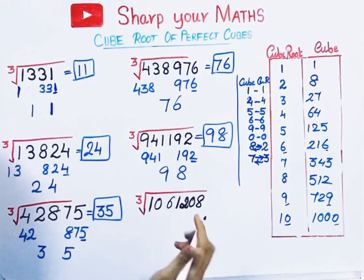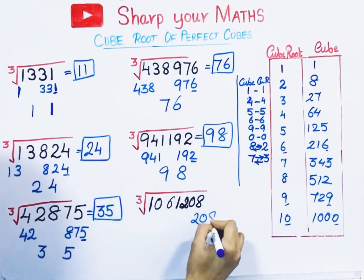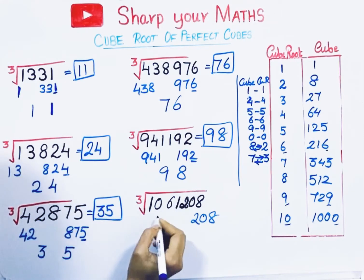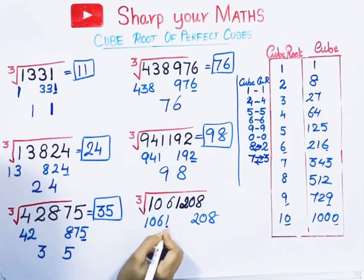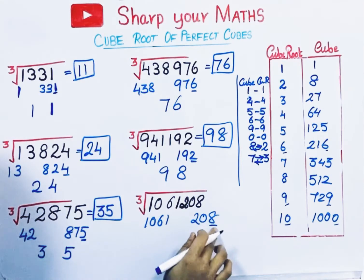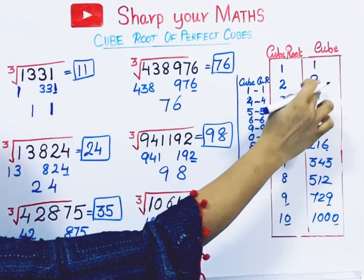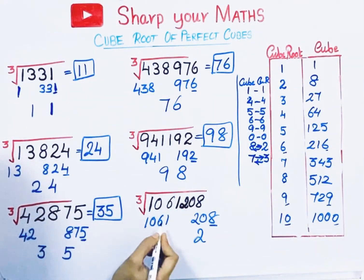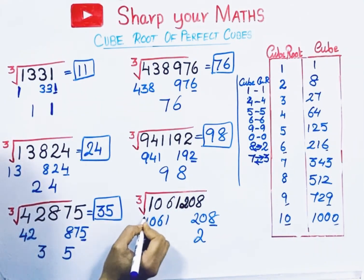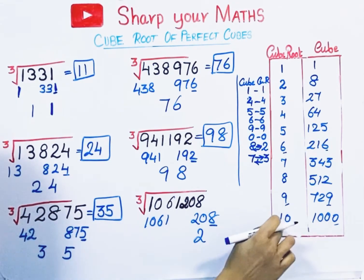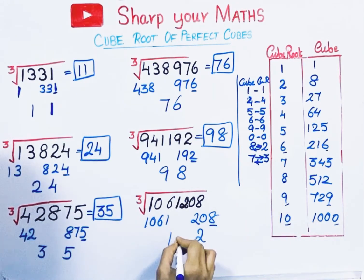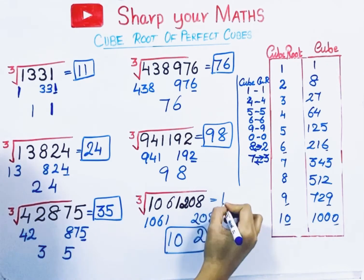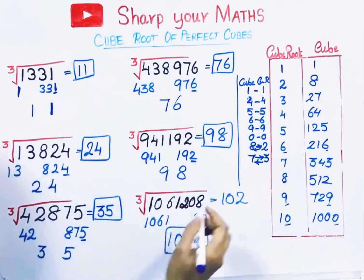Next number: take the last 3 digits as one group, remaining digits as another group — this left group has 4 digits. Check the unit digit — it ends with 8. If the cube ends with 8, the cube root ends with 2. The left group is close to the cube 1000, so take its cube root, 10. The cube root of this number is 102.